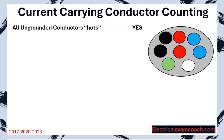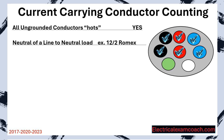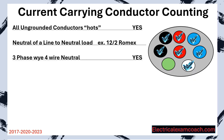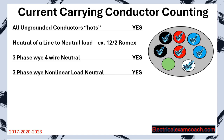The first one's easy: all ungrounded conductors — all of the hots — are going to be considered current carrying conductors under normal circumstances. The second one is the neutral of a line-to-neutral load. If we have a light bulb that draws one amp on a 120-volt circuit, there's going to be one amp going in on the hot and one amp flowing back on the neutral, so it is also a current carrying conductor. Same thing with a three-phase four-wire neutral — we're just going to count it as a current carrying conductor. The three-phase non-linear neutral load from large fluorescent lighting or large computer data centers — you're going to count its neutral as well. Grounding conductors do not count and are not considered current carrying conductors.